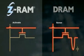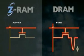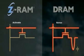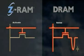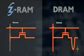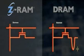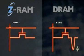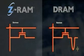Contrast this to Z-RAM, where the current is sourced directly from a power rail. Turning on the transistor causes a large current to flow onto the bit line, rapidly charging it and allowing the state of the memory cell to be quickly detected.